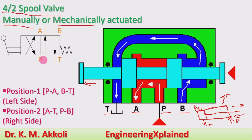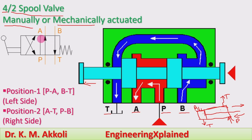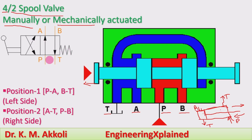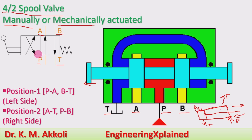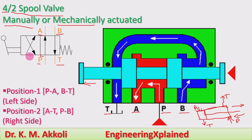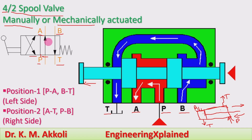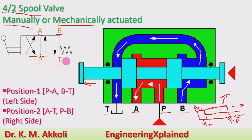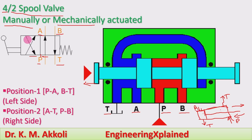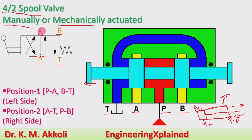Symbolically, the valve has four ports — pump, tank, actuator, and back — and two positions. In the right position, the pump connects to the actuator and the back line connects to tank. In the left position, the actuator connects to tank and the pump connects to the back port.